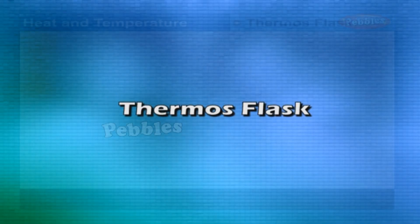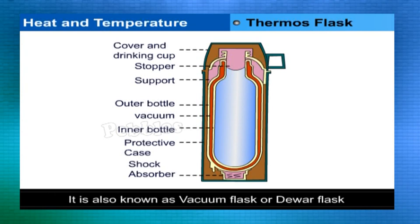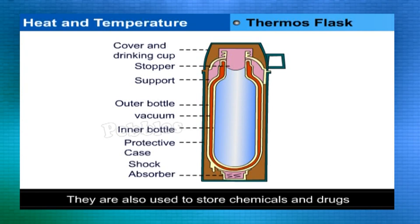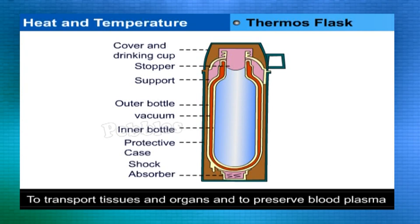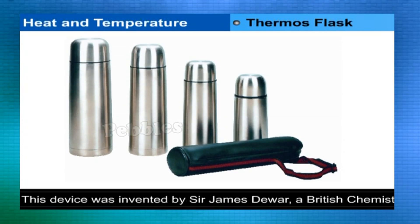Thermos Flask. It is a device that keeps liquids hot or cold for many hours. It is also known as a vacuum flask or Dewar flask. Thermos flasks are used to carry coffee, juice, milk, or soup. They are also used to store chemicals and drugs, transport tissues and organs, and preserve blood plasma. This device was invented by Sir James Dewar, a British chemist, who developed it for storing liquefied gases.